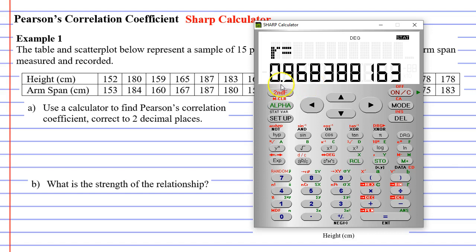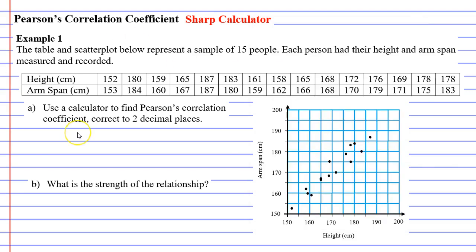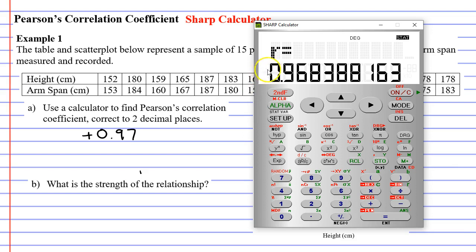Now, correct to two decimal places, this will be 0.97. 0.97. And to be more specific, it's a positive number. If it wasn't, it would have had a negative at the beginning of it.